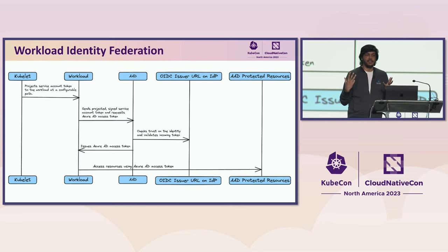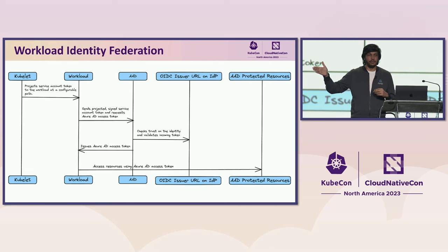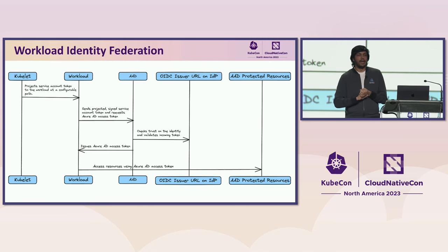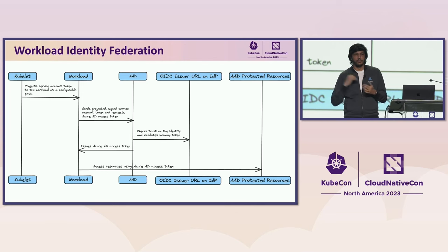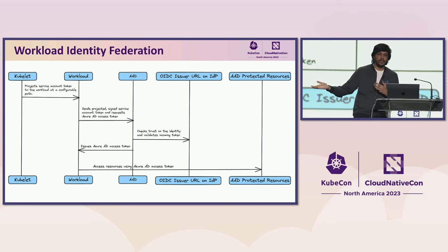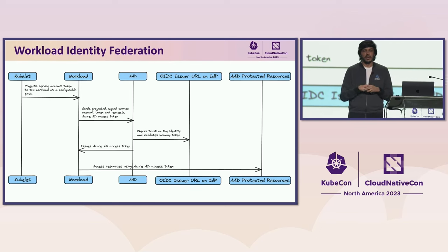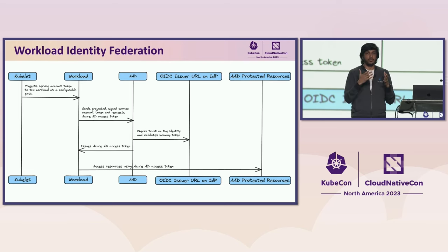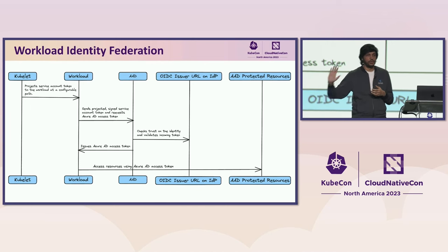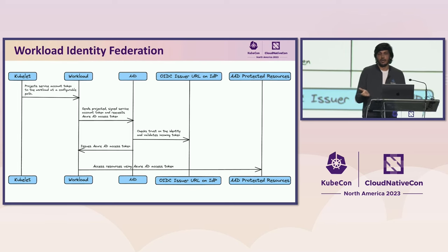This flow diagram is similar but adds two components: the kubelet and the external protected resource. As an example using the Microsoft Identity Platform: the kubelet generates the token and gives it to the workload at pod startup. The pod exchanges that token by sending it to the Identity Platform, which checks the trust on identity, validates the incoming token using the discovery protocol, and issues an Azure AD access token to the workload. The workload can then send that Azure AD access token to access the resource — for example, a pod getting a secret from Azure Key Vault.